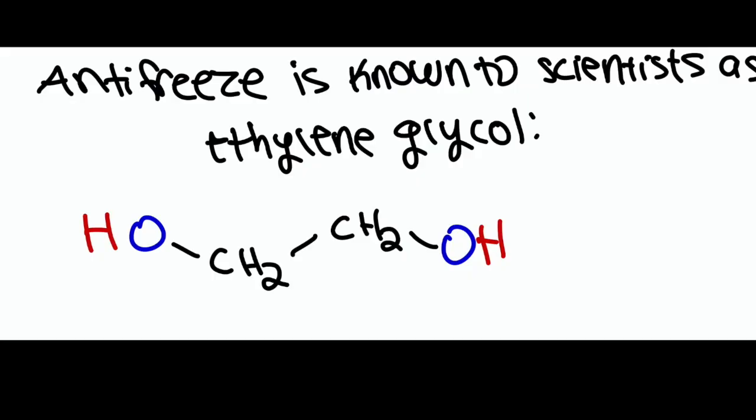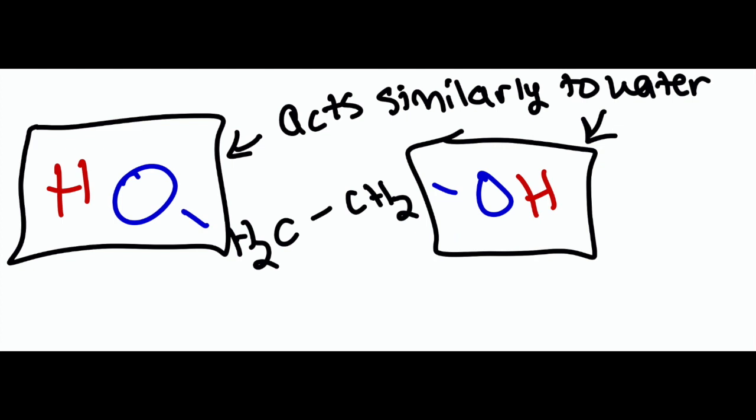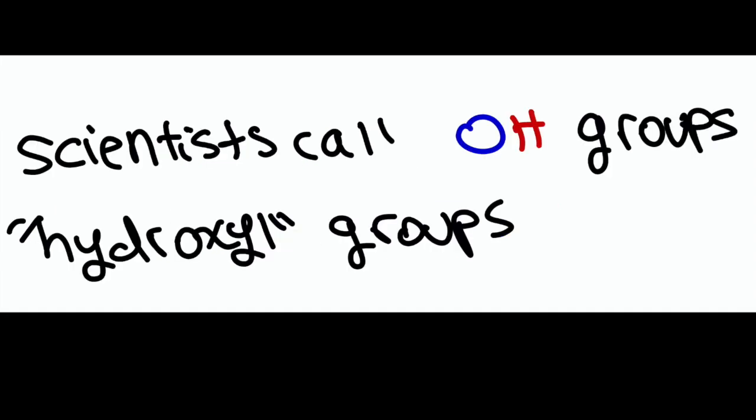Antifreeze is made of a chemical compound called ethylene glycol. Ethylene glycol has special qualities that make water unable to crystallize or form ice when it otherwise would at its freezing point of 0 degrees Celsius. Firstly, we should look at the structure of ethylene glycol. As you can see, on both sides of the two groups of carbon atoms, there are two OH, or hydroxyl groups attached.